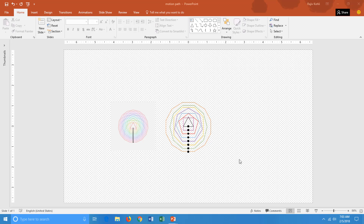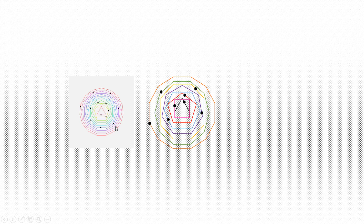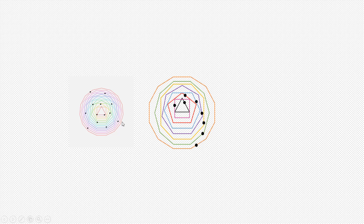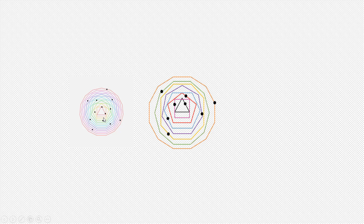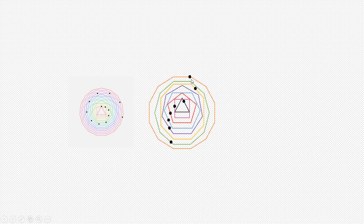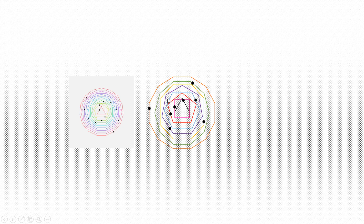Hello everyone, this is Rajiv and welcome back to our channel The Teacher. Today we are going to make this animation in PowerPoint 2016. I saw this GIF file on reddit.com and thought why not try this in PowerPoint. As you can see, there are 13 dots moving around and at one time they all get together and create a very nice animation. In my version I have taken only 8 dots, but you can add as many dots as you want.